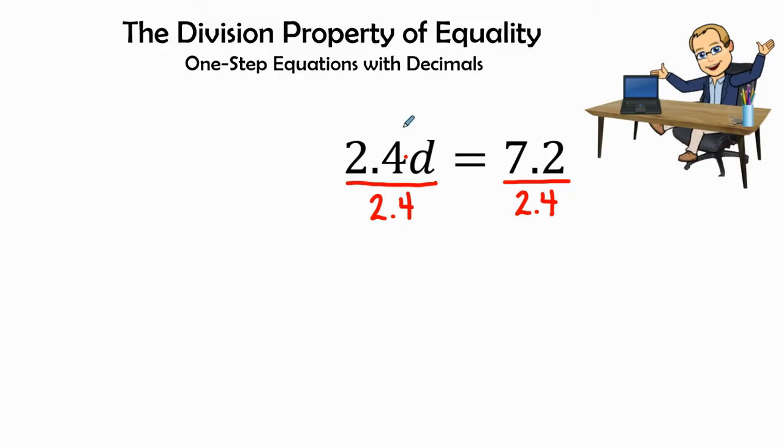We see that 2.4 over 2.4 equals 1, because if I have the same number over itself in a fraction, the value would be 1. So I will have 1d, and there will be like a little imaginary 1 right here.